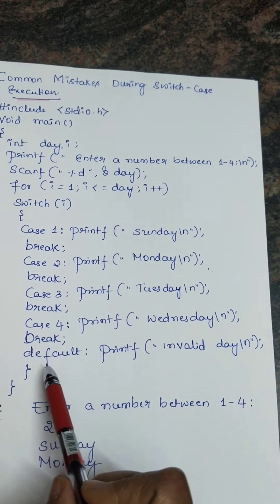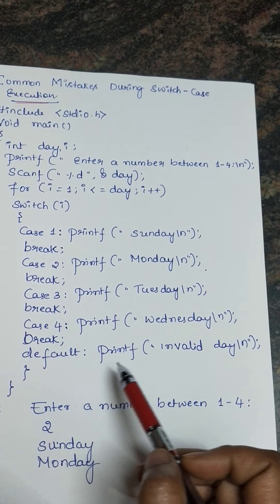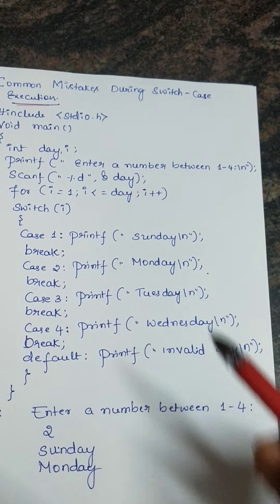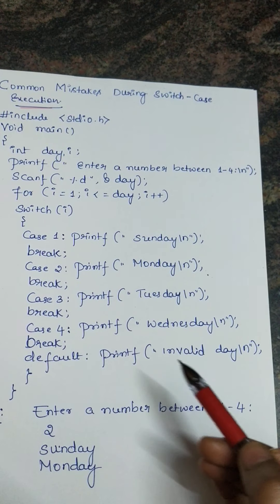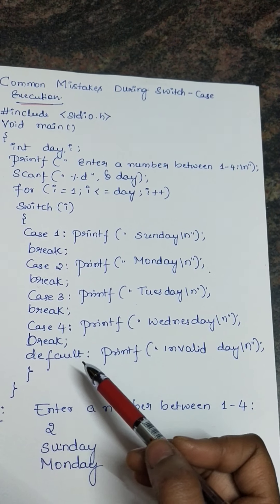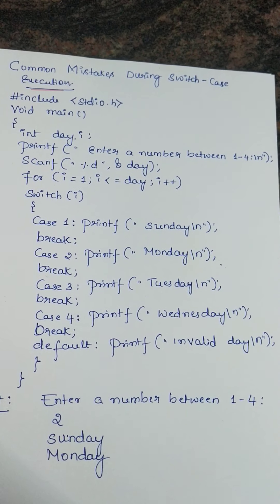And default also when we print the default. When we are writing default, suppose it is asking for number between 1 to 4, but if I enter the number like 5, that is an invalid choice. So to print the invalid choice the default statement will be written.